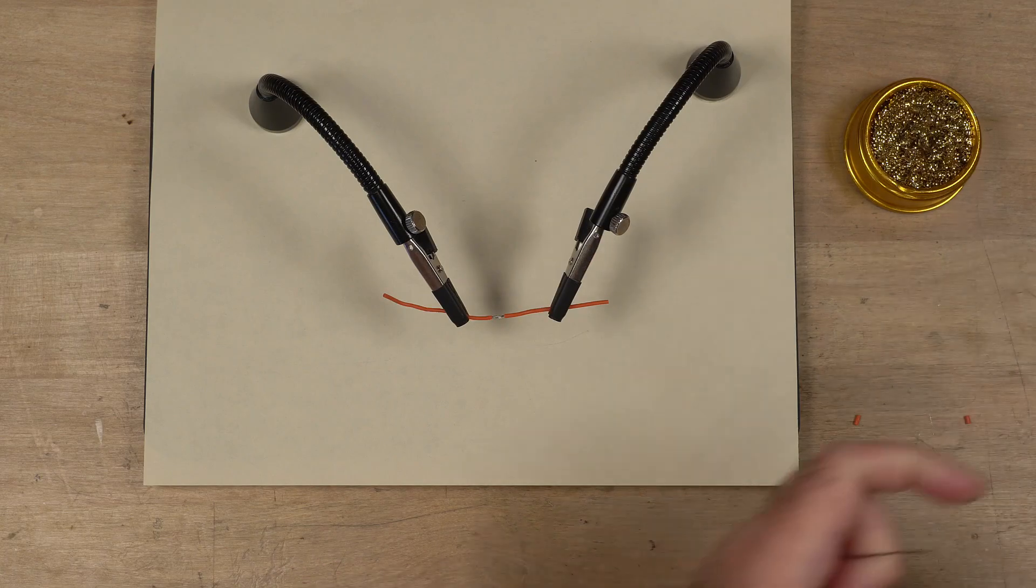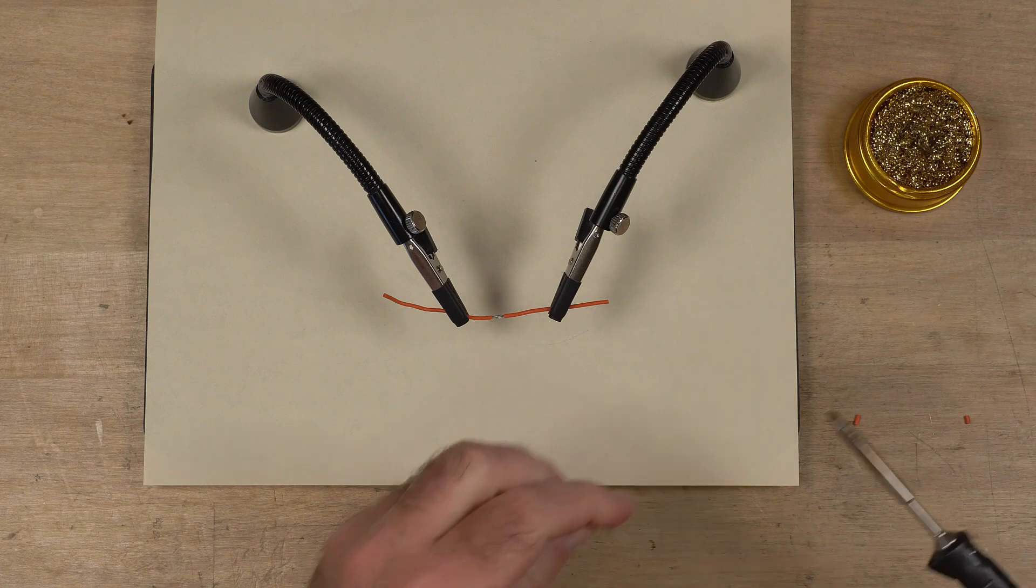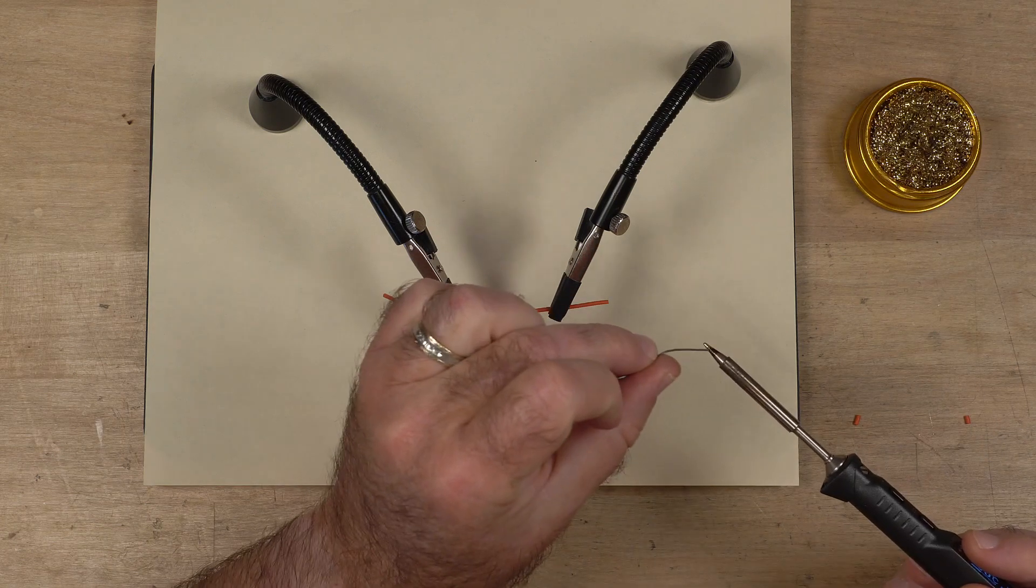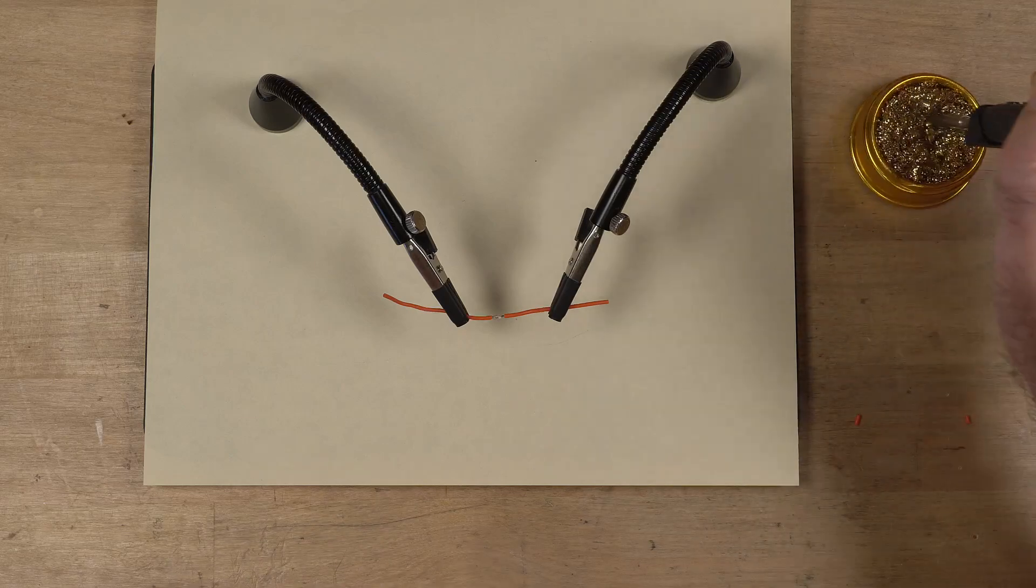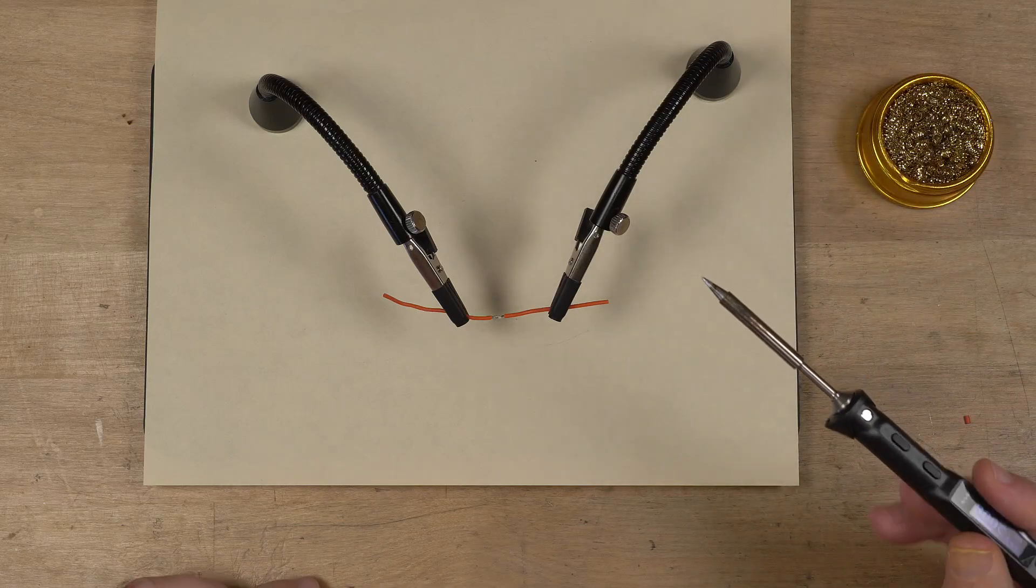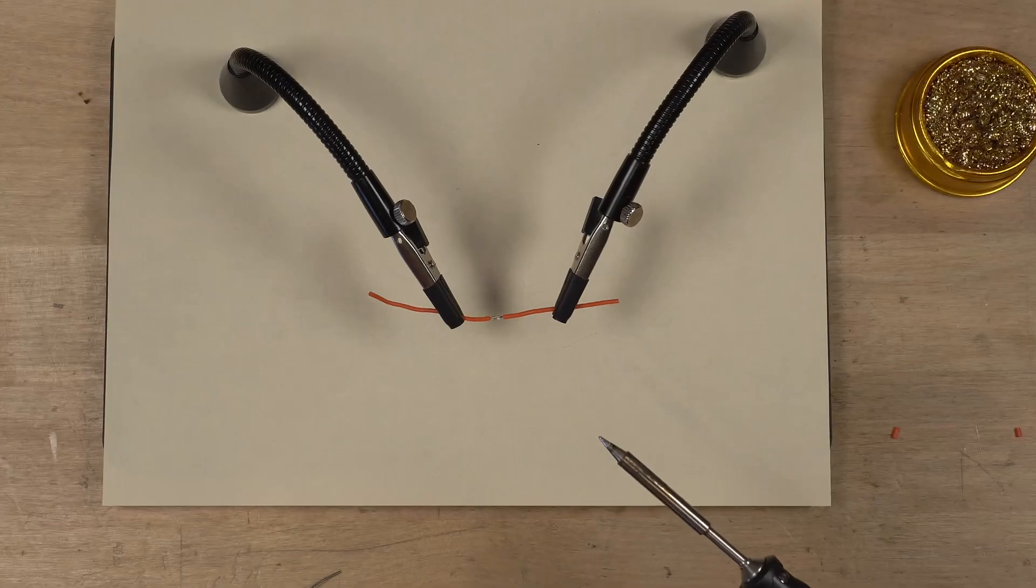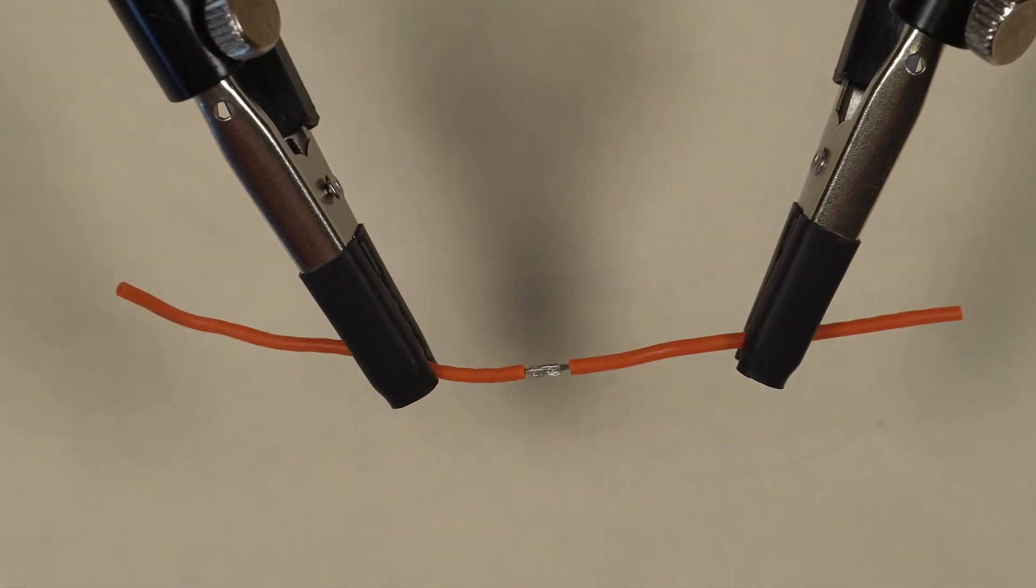Now the soldering iron is nice and warm, I will tin the soldering iron and then clean it. With a nice clean tip I'm ready to go. Zoom back in and take a look at the wires again.